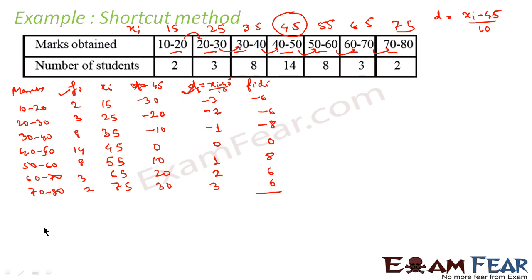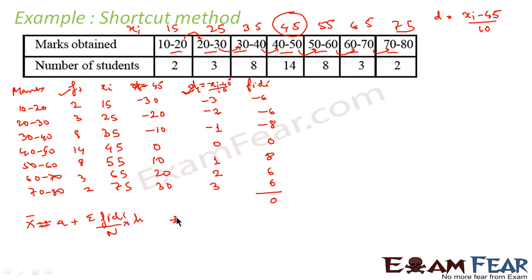The formula for the exact mean is: mean = assumed mean + (Σfi·di / n) × h. Let's find Σfi·di: −6 + (−6) + (−8) + 0 + 8 + 6 + 6 = 0. Since Σfi·di = 0, the exact mean equals the assumed mean. So the exact mean is also 45 — though this is by luck; generally we need to compute it properly.